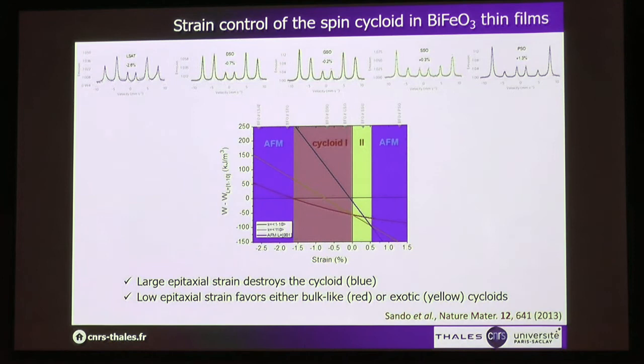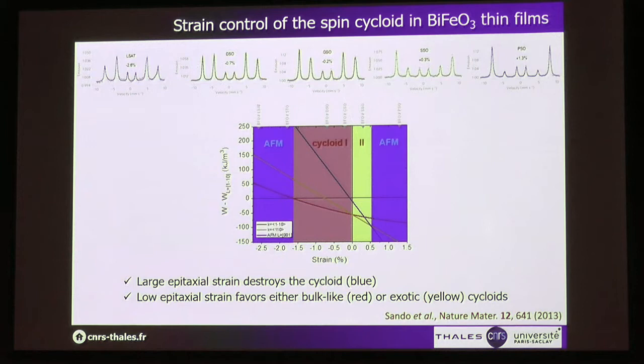In the films, it is a bit more complicated. In our group, Daniel Sando worked on the influence of strain by epitaxy on the magnetic order of these films. For high tensile or compressive strain, the spin cycloid no longer exists, and there is a pseudo-collinear anti-ferromagnetic order. But for small strain, we can still preserve the spin cycloid as in the bulk. In this small window, there could also be an exotic cycloid that does not exist in the bulk.